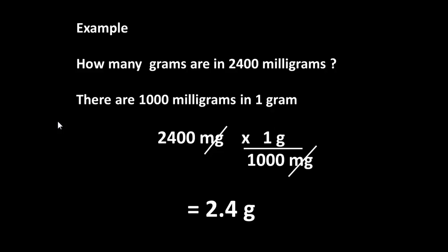So to convert between the two, if we want to know how many grams there are in 2400 milligrams, because there are 1000 milligrams in 1 gram, the equation that we use is that it will be equal to 2400 milligrams times 1 gram divided by 1000 milligrams. The milligrams will cancel out, so our units will be grams, and 2000 over 1000 is 2.4 grams.